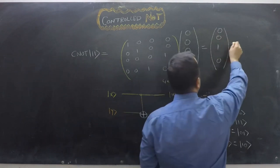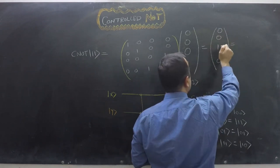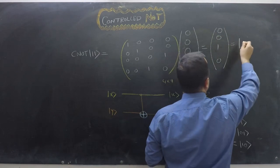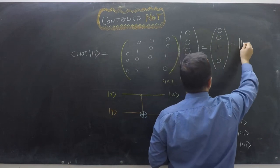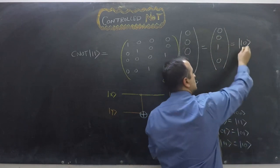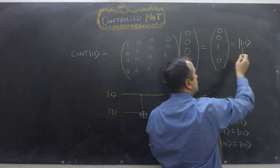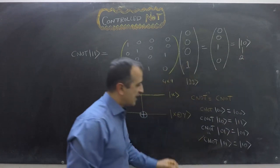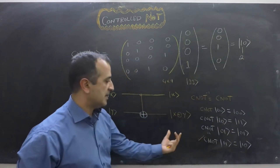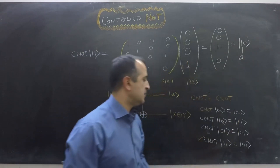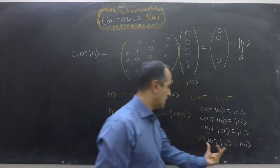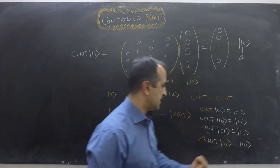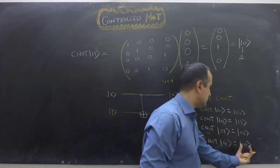The resulting vector [0, 0, 1, 0] has a 1 in the second position, which corresponds to |10⟩. This confirms that when CNOT is applied to |11⟩, the output is indeed |10⟩.